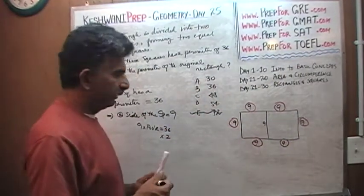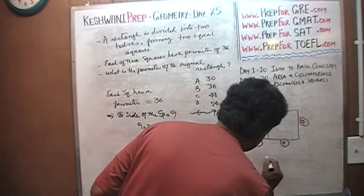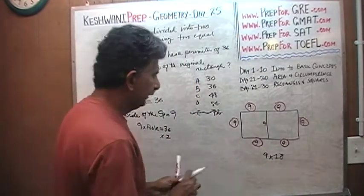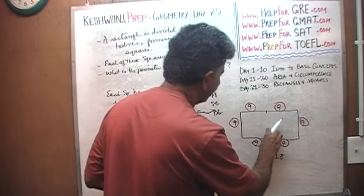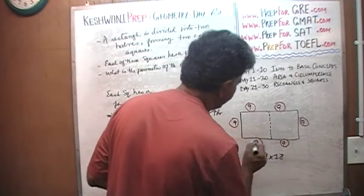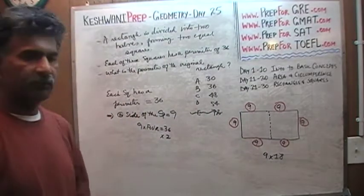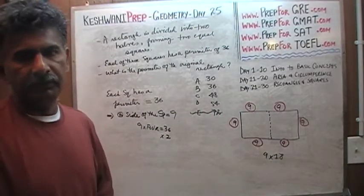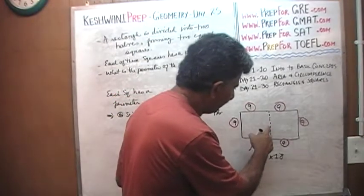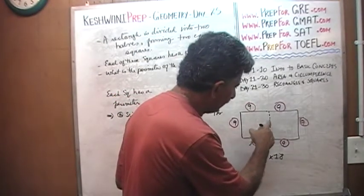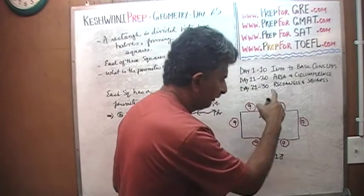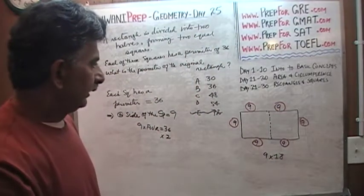The original rectangle was 9 by 18. We took that 9 by 18 rectangle and cut it into halves, giving us two squares of 9 by 9, each with a perimeter of 36. The dividing side belongs to one square on one side and the other square on the other side, but those two interior sides are not included in the perimeter of the rectangle. It is simply 9 times 6.